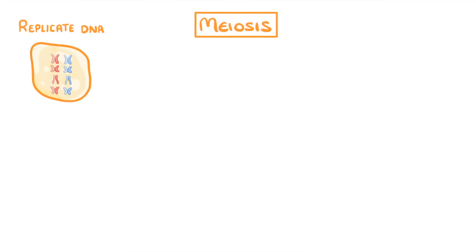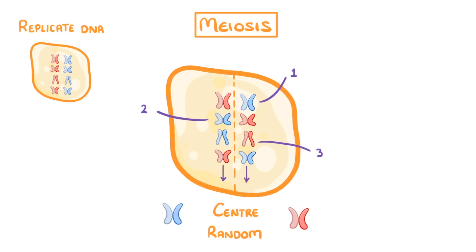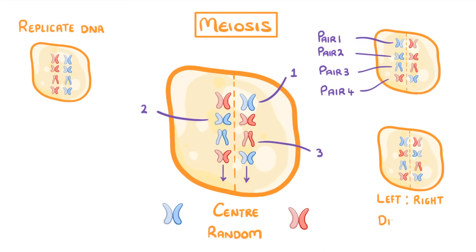Next, these two-armed chromosomes all line up along the center of the cell in their pairs — so here we have chromosome 1 for mother and father, then chromosome 2 from each parent, then 3, and so on. Importantly, which one is on the left and which one is on the right is completely random. So if we looked at two more cells undergoing meiosis from the same person, the chromosomes in the first one might look like this and the other one like this. It will always be pair 1, pair 2, pair 3, and so on, but the left to right order will be random and so it will be different each time.